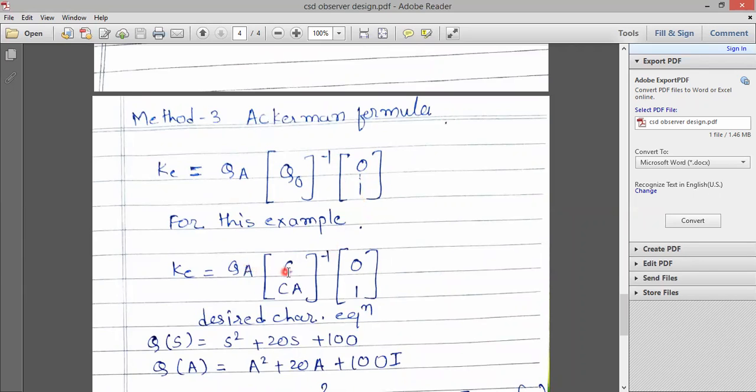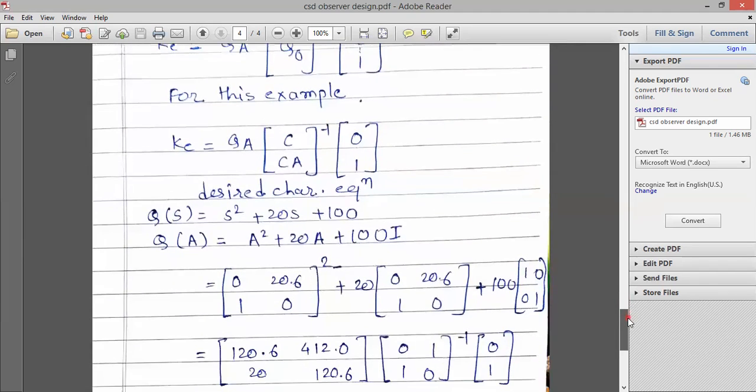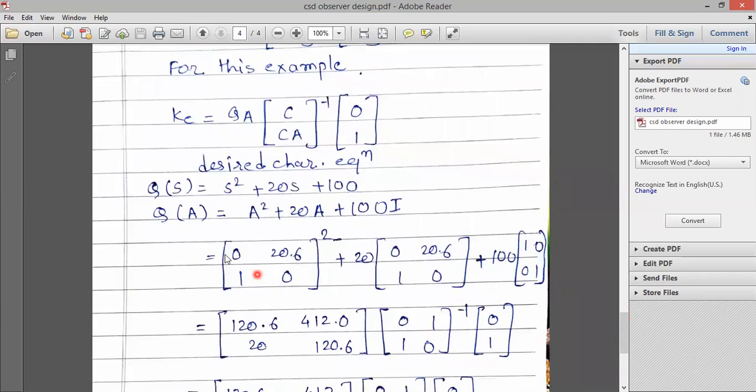For this example, this is the Kalman matrix 0, 1 and QA. QA is the characteristic equation for that particular matrix. Now, this is the desired characteristic equation. So whenever S is there, we have to replace it by A and get the QA value.